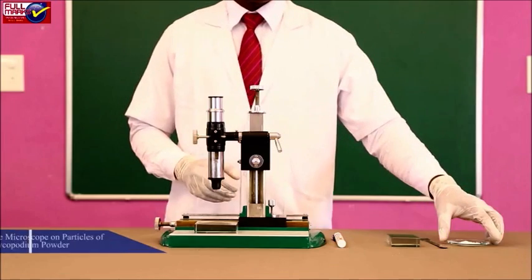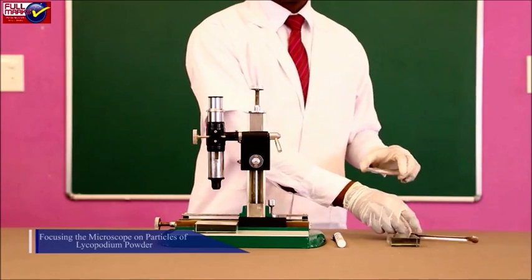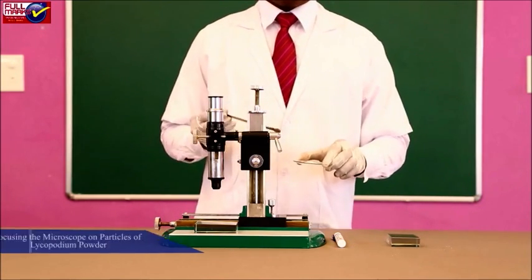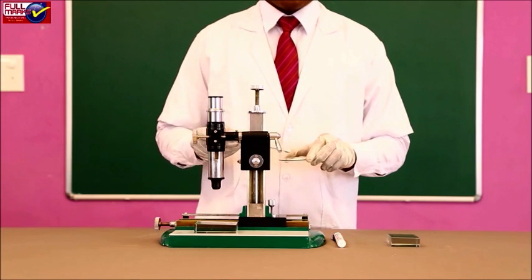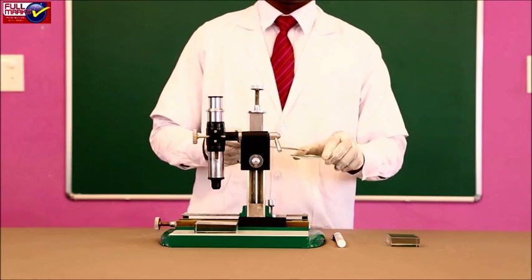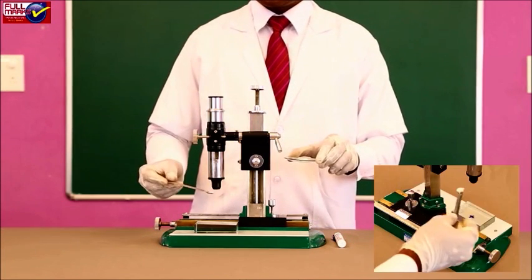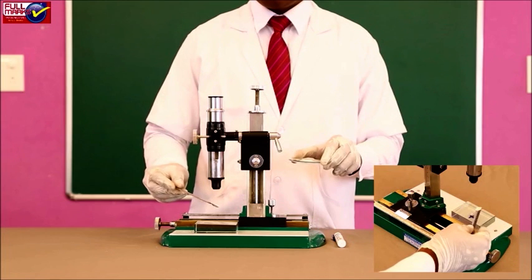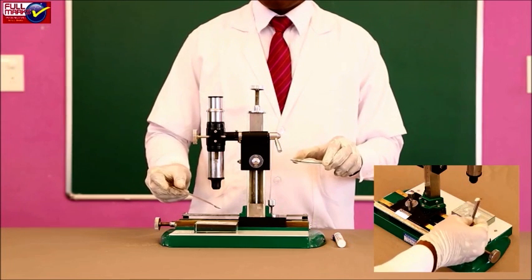Focusing the microscope on particles of lycopodium powder: Sprinkle a little amount of lycopodium powder on top of the glass slab. Ensure a thin layer of powder spread over the glass slab. Rise the microscope upward to focus some of the particles clearly and note the microscope reading as C.